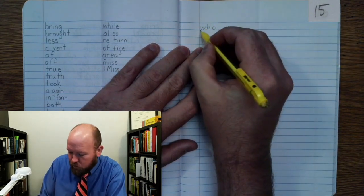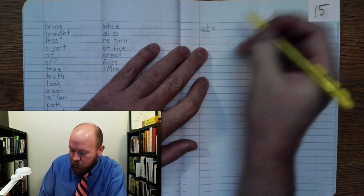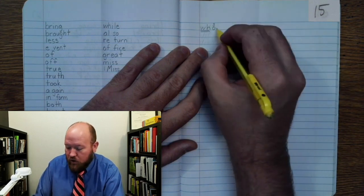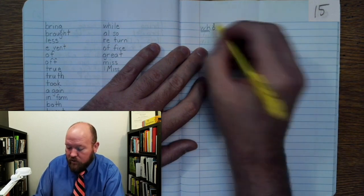Markings: H twice, OO three. So the WH is making the H sound, the O is making its third sound. Put a three above it.